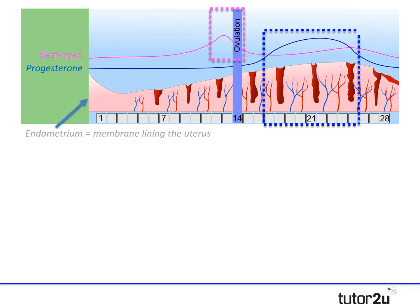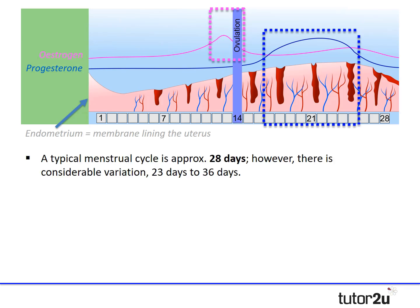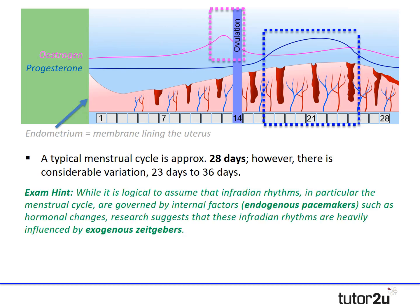It's important to note that although the typical menstrual cycle is around 28 days, there is considerable variation, with some women experiencing a short cycle of 23 days and others a much longer cycle of up to 36 days. An important exam hint here: while it's logical to assume that infradian rhythms — in particular the menstrual cycle — are governed by internal factors, what we call endogenous pacemakers such as hormonal changes, research actually suggests these rhythms are heavily influenced by external factors, known as exogenous zeitgebers.